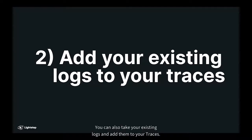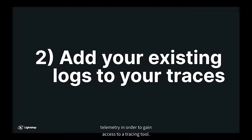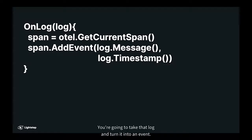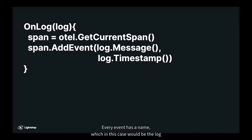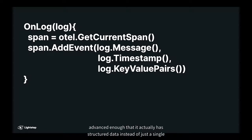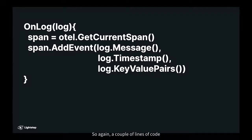But what else can you do? You can also take your existing logs and add them to your traces. This would mean you've installed OpenTelemetry to gain access to a tracing tool, and one way to enrich the data is to take your existing logs and move them over to your tracing system. You're going to take that log and turn it into an event. Every span has an addEvent method. Every event has a name, which in this case would be the log message. Events can optionally take a timestamp for when they occurred — if you're doing this out of band, you can take the timestamp off of the log. Also, if your current logging tool has structured data instead of just a single message string, add those logging attributes to your span event. A couple of lines of code, and now all of your existing logs are being attached to your trace as events.